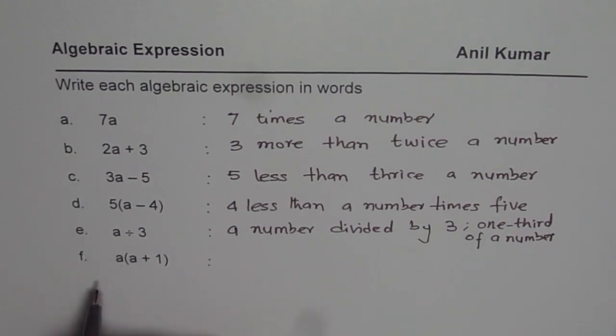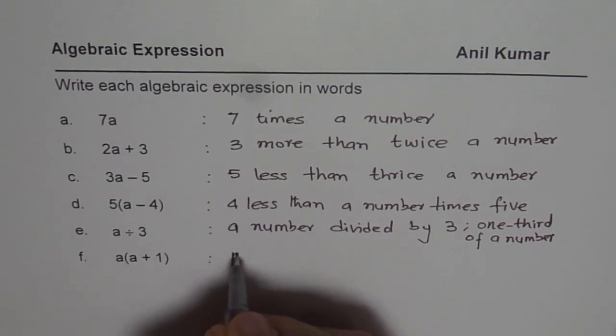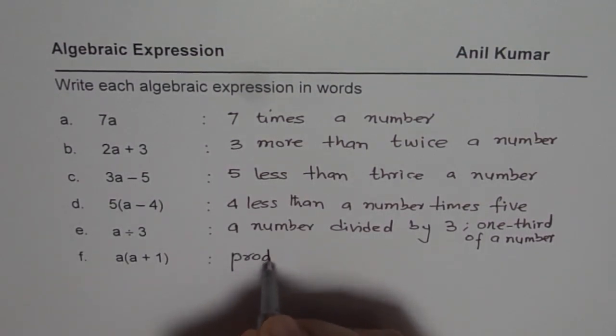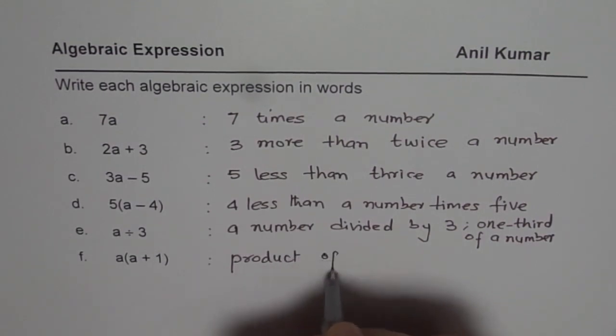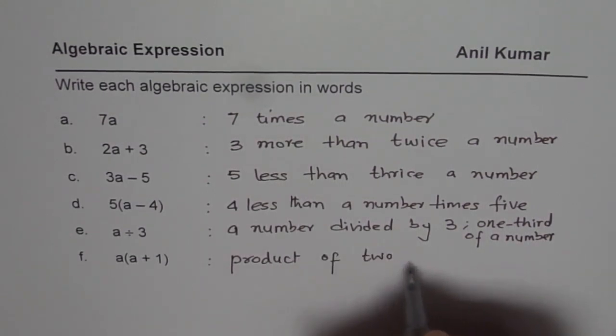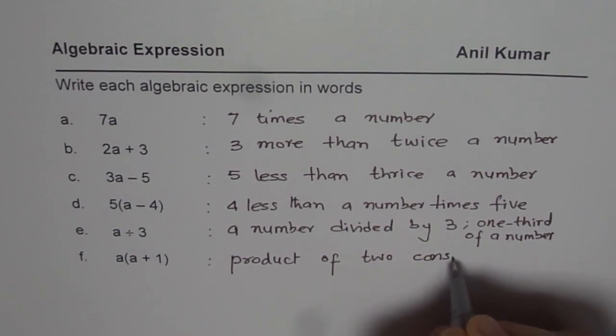The other way is, whenever we have terms like a and a plus 1, we also call them consecutive numbers, so we can say this as product of 2 consecutive numbers.